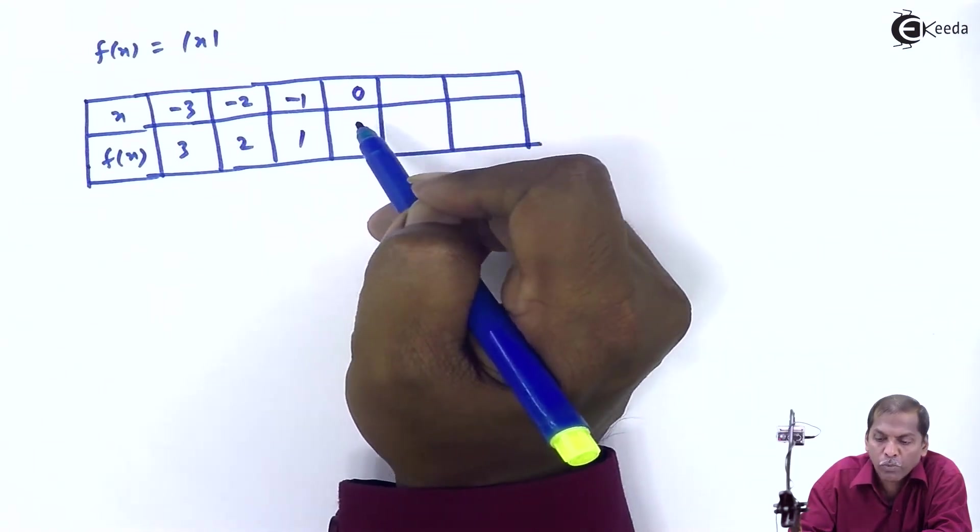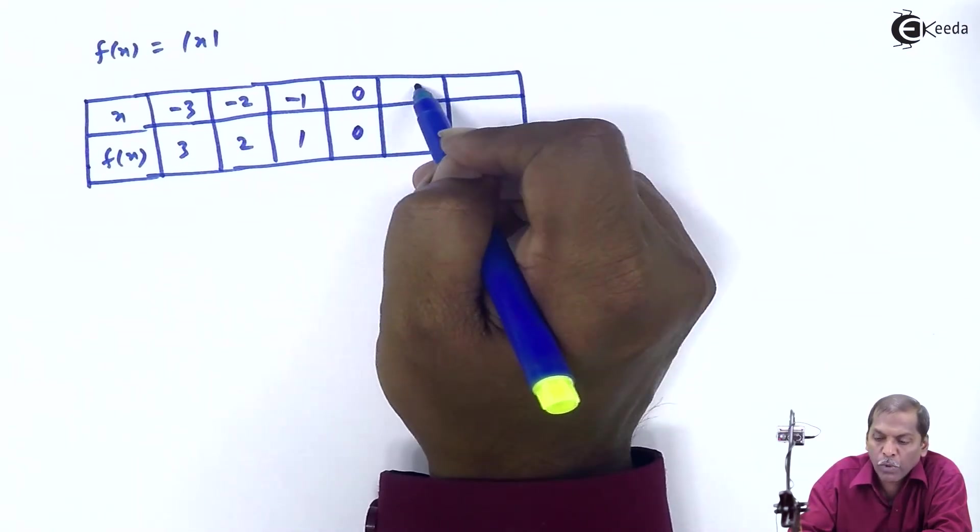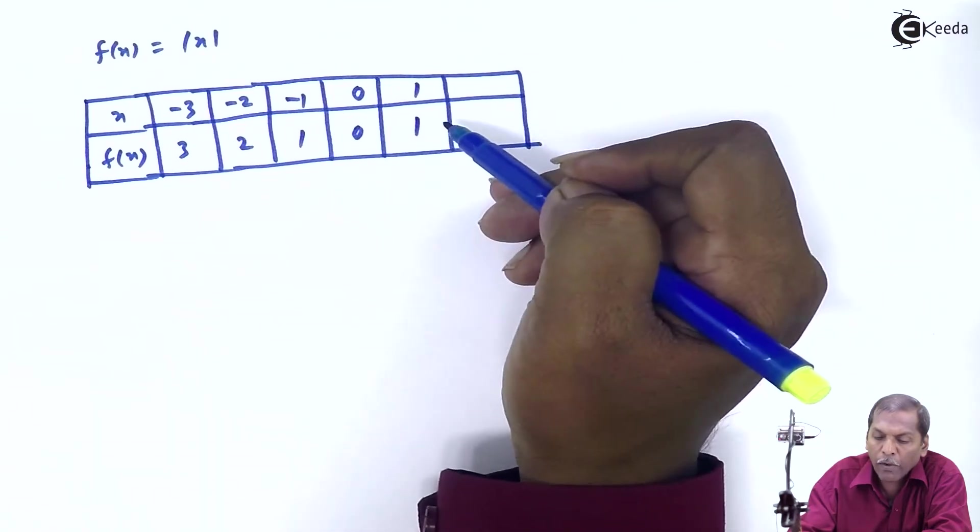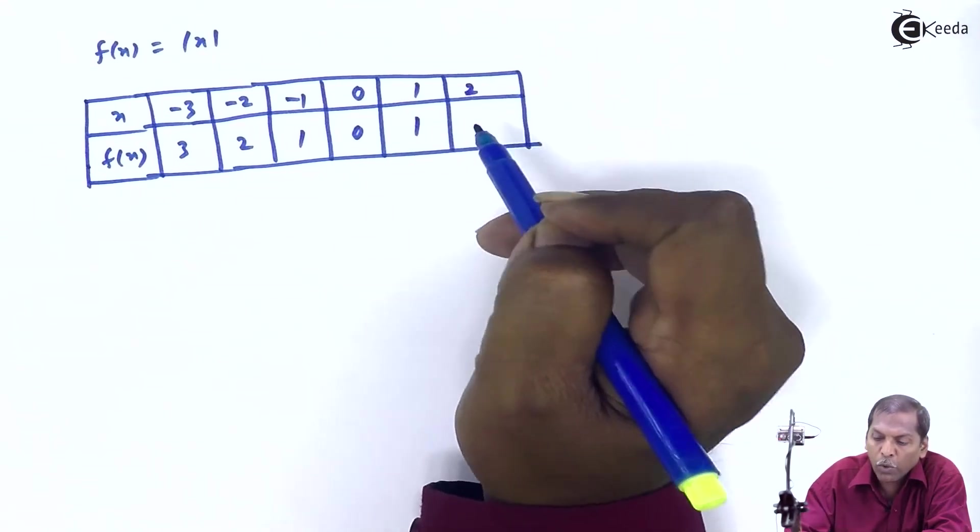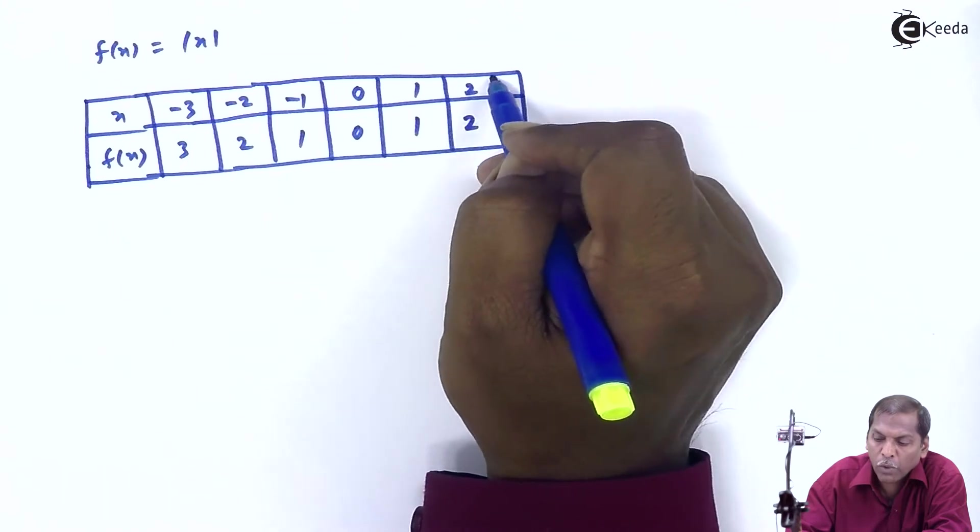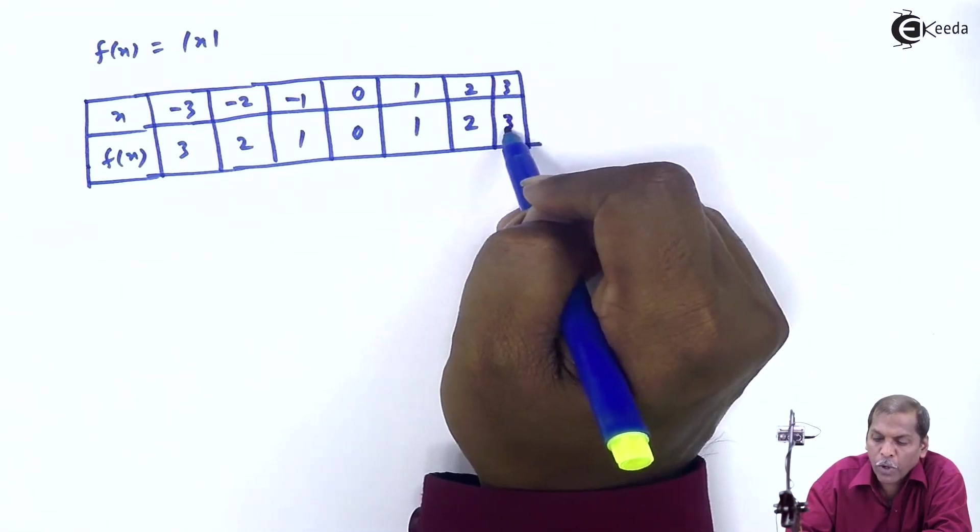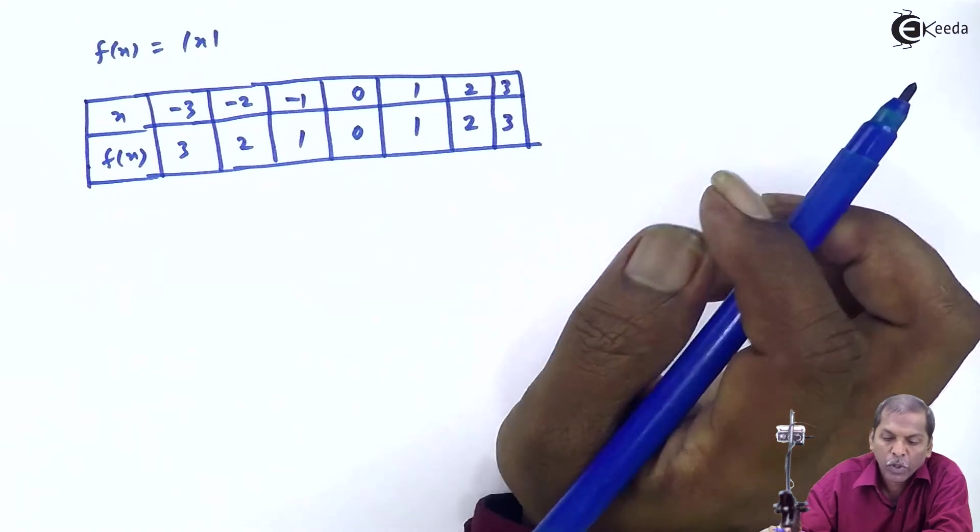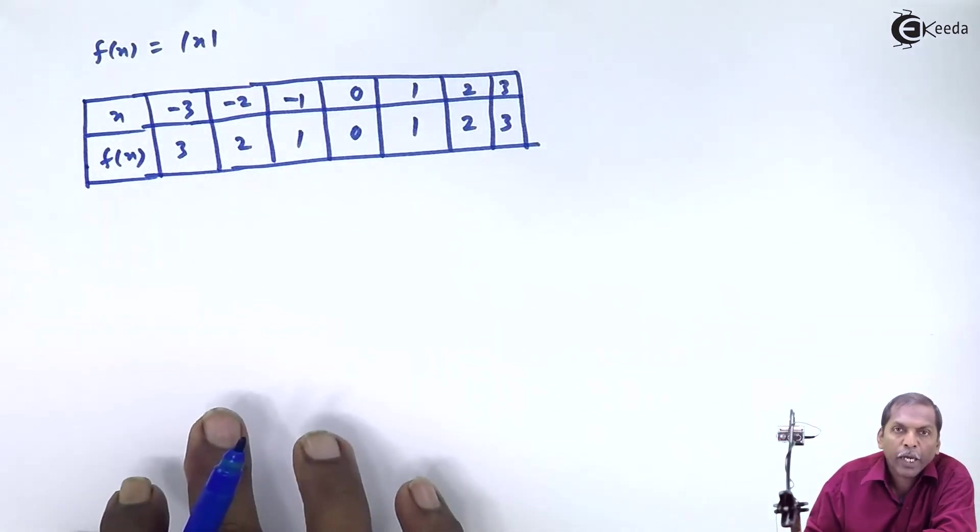Then we consider 0, modulus of 0 is 0. Then 1, modulus of 1 is 1. Then 2, modulus of 2 is 2. And finally 3, modulus of 3 is 3. So this is our table.